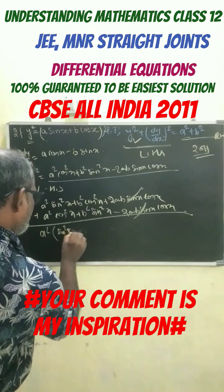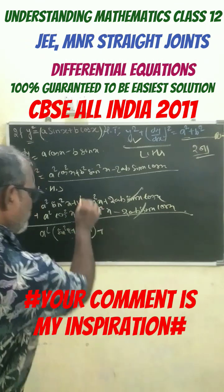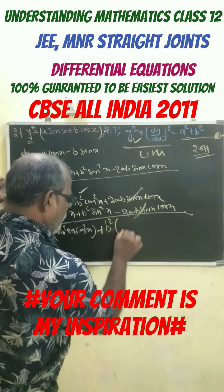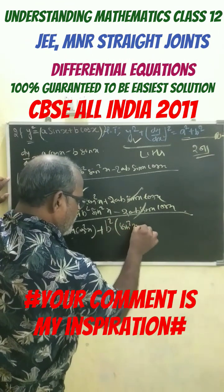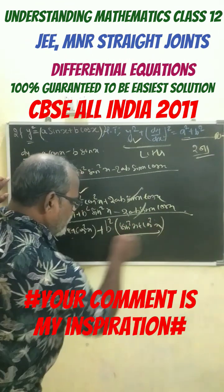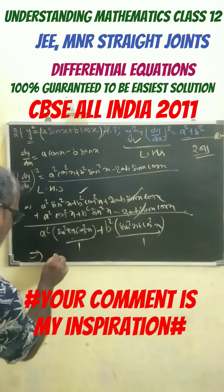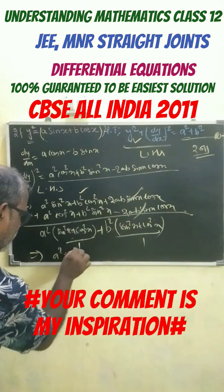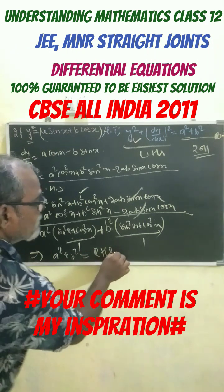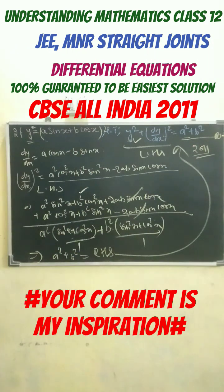Here we get a squared times (sin squared x plus cos squared x) plus b squared times (sin squared x plus cos squared x). We know that sin squared x plus cos squared x equals 1. So, our final answer becomes a squared plus b squared, which equals RHS.